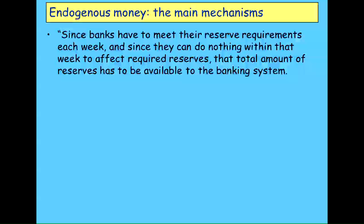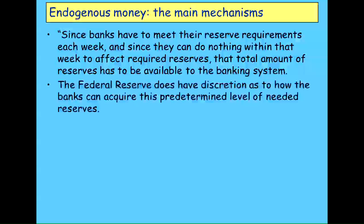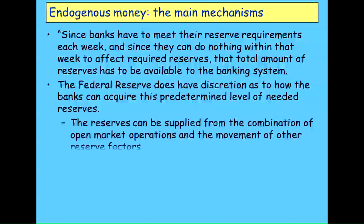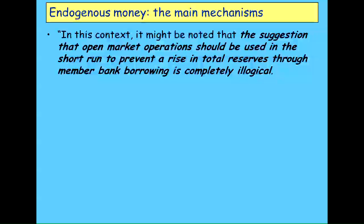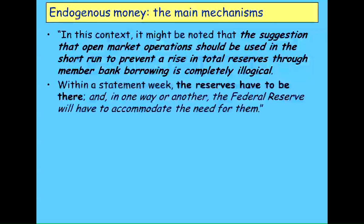So reserves are not a control mechanism. Since banks have to meet their reserve requirements each week, and they can't affect the reserves they've got that week, the total amount has to be available — compulsorily. The Federal Reserve has some discretion about how it might do that if necessary — by open market operations or borrowing from another member bank. But there is no discretion. The suggestion that you could use open market operations or other short-term mechanisms to control reserves is completely illogical. The reserves simply have to be there.